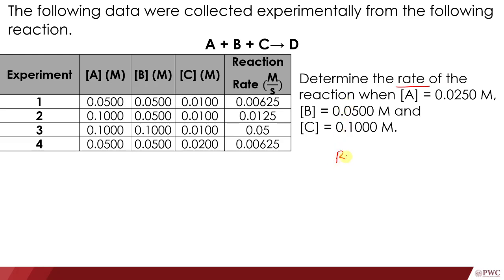The rate is equal to some constant times the concentration of the reactants raised to their order. So the rate equals k times the concentration of A raised to some x power, times the concentration of B raised to some y power, times the concentration of C raised to the z order. Before we can calculate the rate, we need to determine the values of k, x, y, and z. Let's determine the order of the reaction — these are x, y, and z in the equation.